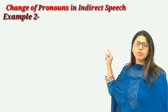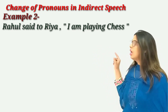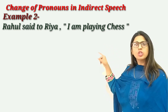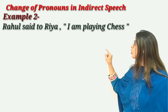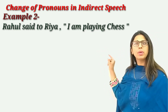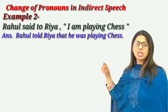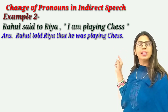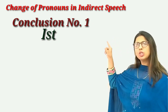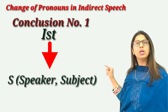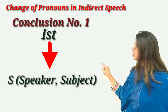Sentence number two: Rahul said to Rhea, 'I am playing chess.' Now here Rahul is the name of a boy, so the 'I' which is present inside the inverted commas will change according to Rahul. The answer would be: Rahul informed Rhea that he was playing chess. We come to the first conclusion — the first person changes according to the subject. One stands for S.